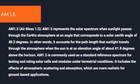AM1.5, or air mass 1.5, represents the solar spectrum when sunlight passes through the Earth's atmosphere at an angle corresponding to a solar zenith angle of 48.2 degrees. In other words, it accounts for the path length that sunlight travels through the atmosphere when the Sun is at an elevation angle of about 41.8 degrees above the horizon.